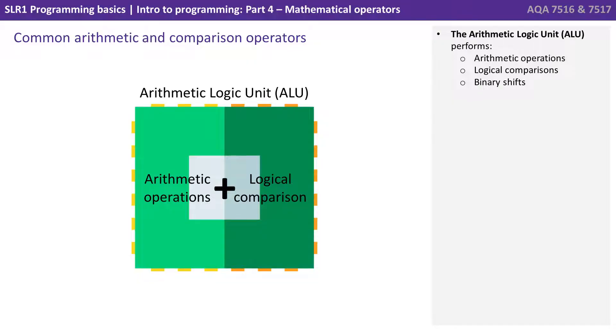So let's start with common arithmetic and comparison operators. The Arithmetic Logic Unit or ALU performs arithmetic operations, logical comparisons and binary shifts, and it's one of the core components of the CPU.